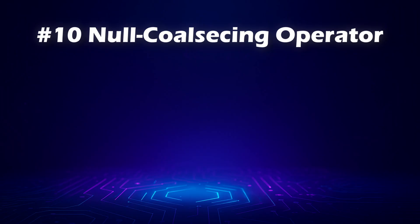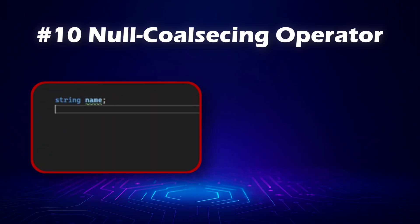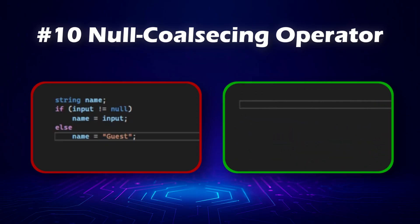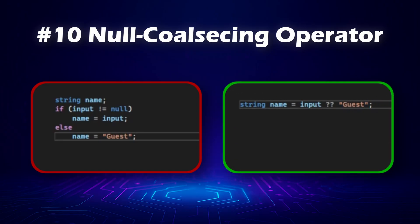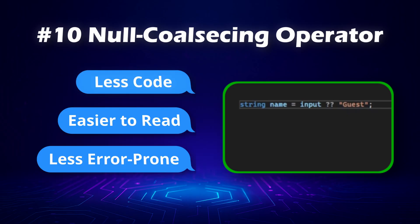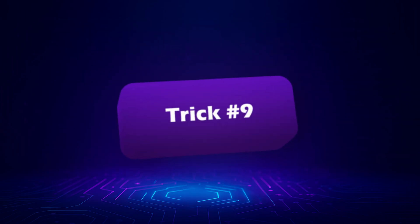Null checks everywhere can be really annoying. I think most of us write it like this. But here's a little trick to simplify this expression: you can do this with the null coalescing operator. The benefit is that there's less code, it's easier to read, and it's also less error-prone. Let's move on to trick 9.